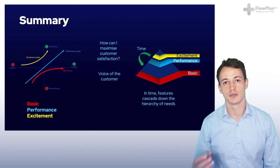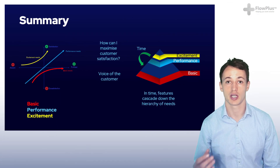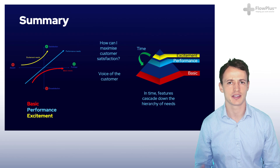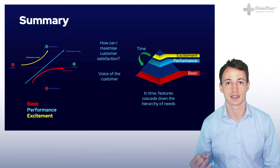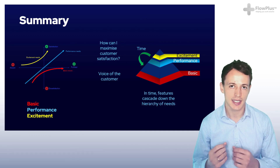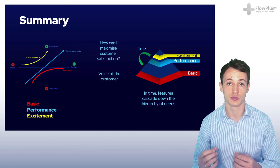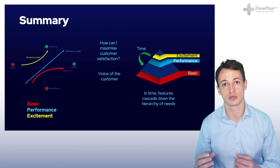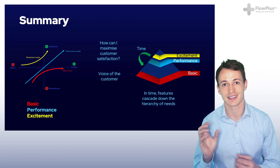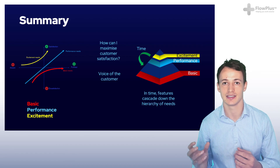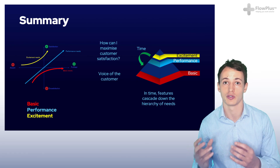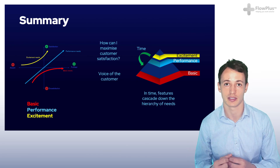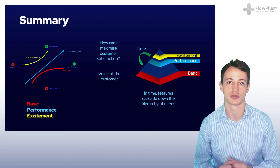The Kano model uncovers your customer needs and the voice of your customer into three categories: basic, performance and excitement needs. In the next module, we will learn about a practical tool called QFD that translates these needs directly into functions and into features of your product or service. Please join me on the next module.